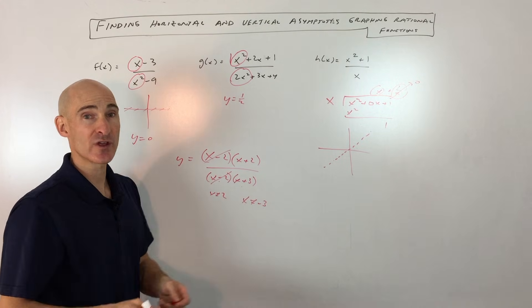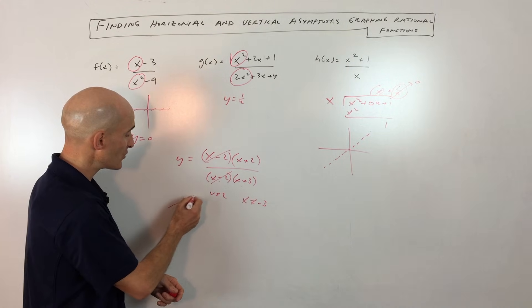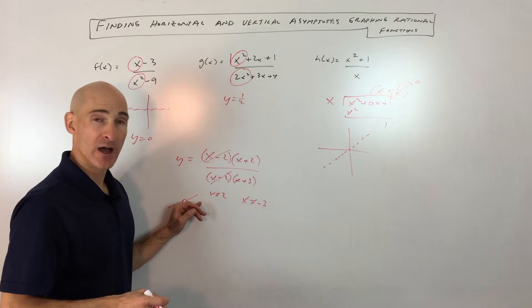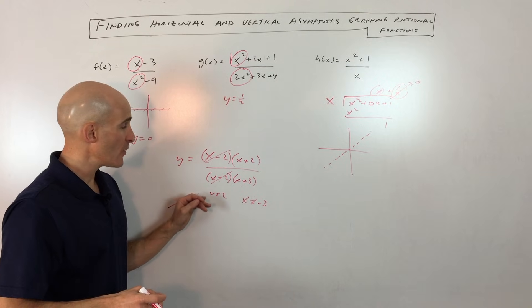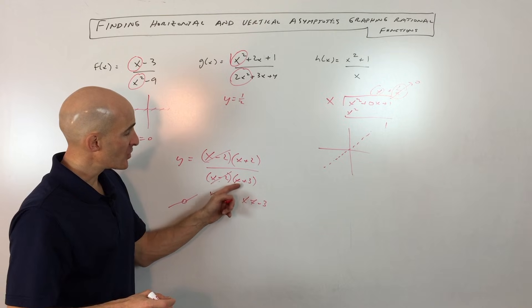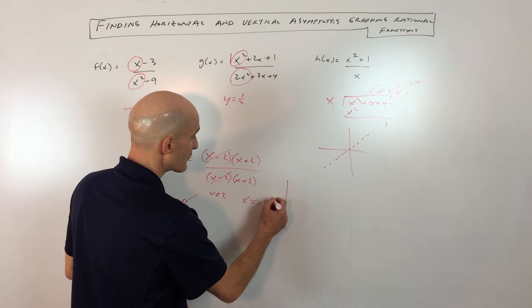we're actually not going to get a vertical asymptote there. We're going to get what's called a removable discontinuity or a hole in the graph. You can check out the video I did on that if you want to learn more about removable discontinuities. But for this video, we're just going to talk about the vertical asymptotes.